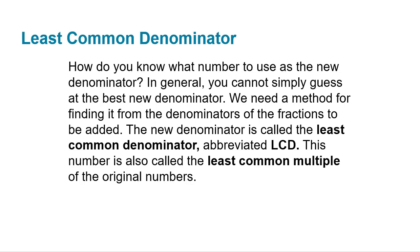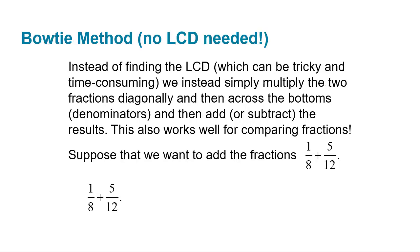So that whole least common denominator thing — sure, you can find it, but it's a pain. I think the bow tie method, which uses the idea of just finding a common denominator, is much easier than doing the least common denominator. It's fewer steps, and everything you're doing is a simpler mathematical operation. It takes less thinking about it.